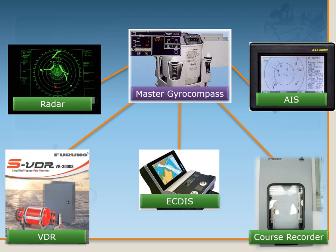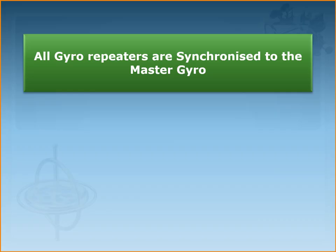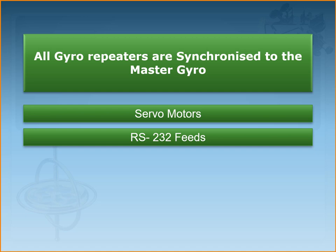Just like gyro bearing repeaters, gyro repeaters must be synchronized with the master gyro, which is best done with the vessel stationary or alongside a wharf. Gyro repeaters are provided with illumination for use in hours of darkness. Any bearings taken from a gyro repeater must first be corrected for gyro error, either high or low as the case may be.